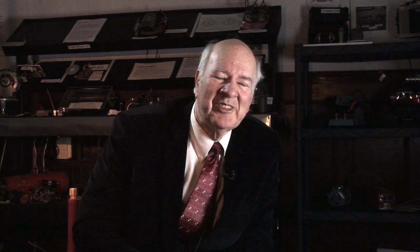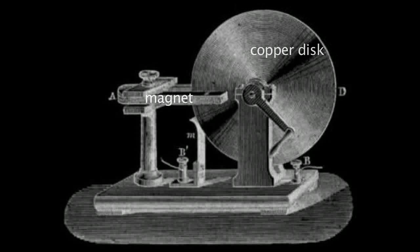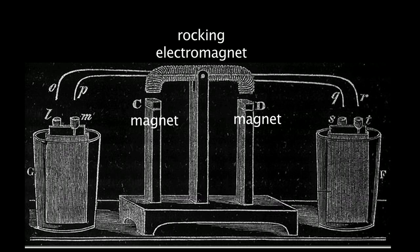In our power system today, we use both effects. A generator uses Faraday's technique — just moving a wire relative to a magnet. But transformers use Henry's technique: you convert from electricity into magnetism in the core, then magnetism back to electricity on the other end.